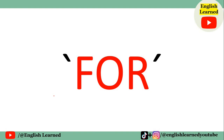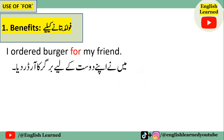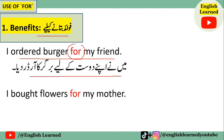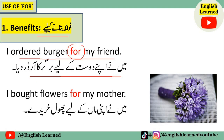Ab hum dekhte hain ke 'for' preposition ko hum kin paanch cases mein istamal kar sakte hain. First case hai benefits — yani ke fawaaid bataane ke liye. Example: 'I ordered burger for my friend' — maine apne dost ke liye burger ka order diya. Ek aur example: 'I bought flowers for my mother' — maine apni maa ke liye phool khareede.